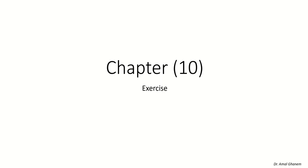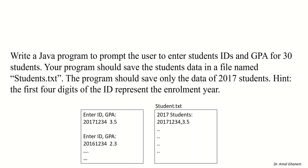Bismillah ar-Rahman ar-Rahim. In these sessions, we will do a couple of exercises on chapter 10: how to read from files and how to write into files. We will start with the following example. We have to write a Java program to ask the user to enter student ID and GPA for 30 students, and then save the student data in a file named student.txt — but only the data of 2017 students. The first four digits of a student ID represent the enrollment year.